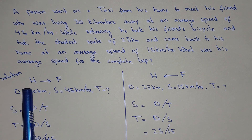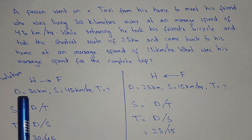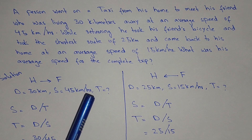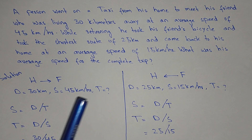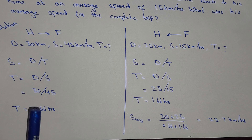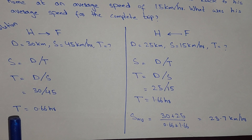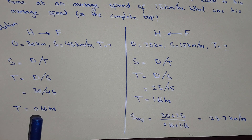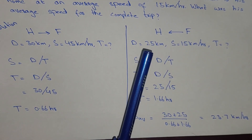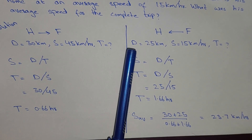When he was going from his home to his friend, he covered a distance of 30 kilometers at an average speed of 45 kilometers per hour. We need to find the time. We know that speed equals distance over time, so time equals distance over speed: 30 divided by 45, which gives a time of 0.66 hours.